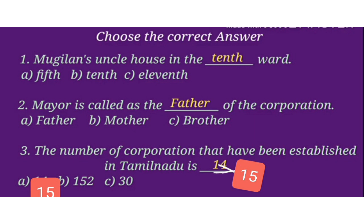Mugilan's uncle's house is in which ward? The answer is the 10th ward. The mayor is called as the father of the corporation.